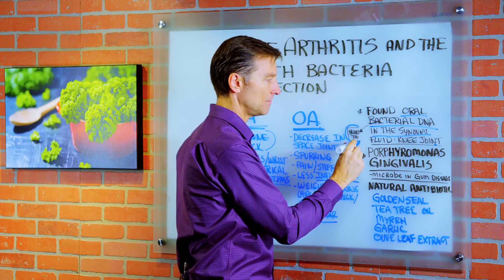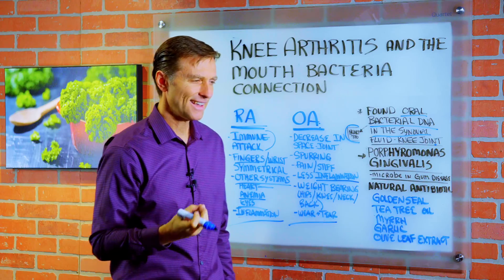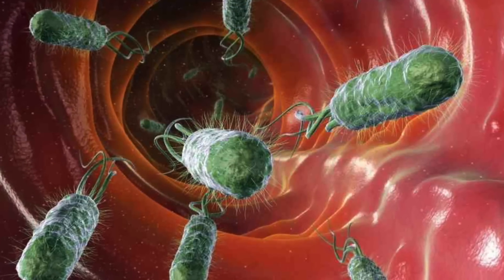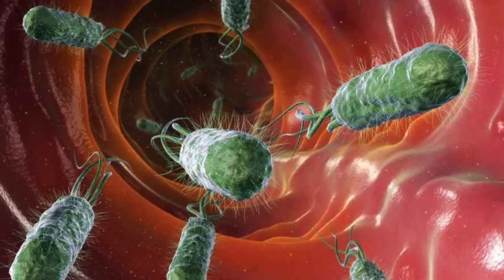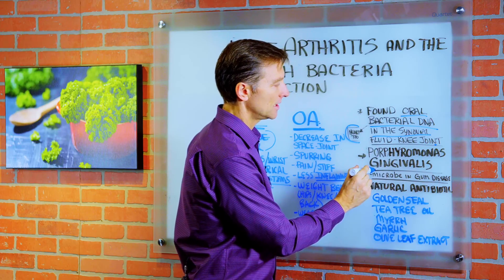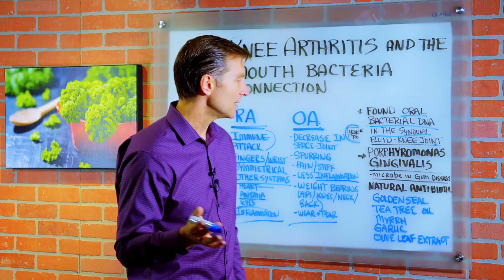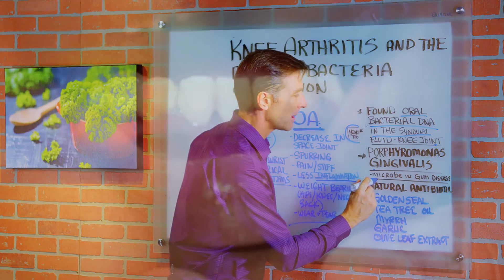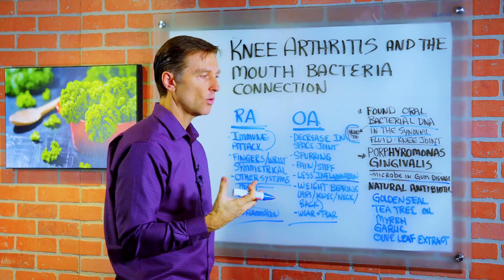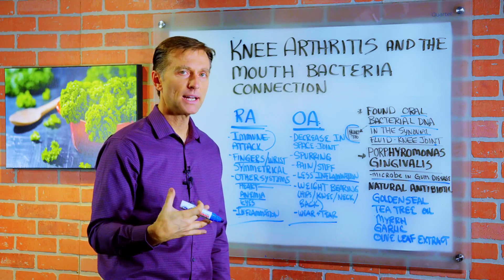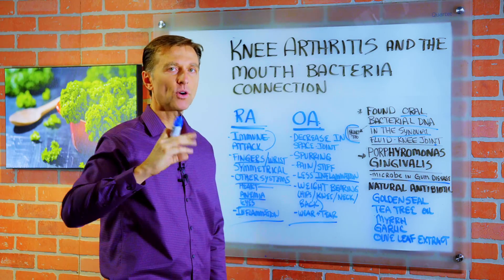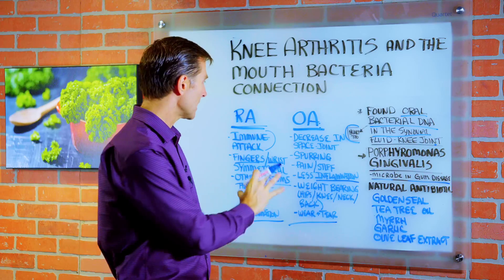It was also found in the heart as well. So the question is: what the heck is this bacteria that's supposed to be in the mouth doing in your joints, in the knees, and why is it in the heart? The name of that bacteria is Porphyromonas gingivalis — not that you really wanted to know that, but that's the name. It's also the microbe involved in gum disease. This made a lot of sense to me, because now it gives a reason for your body to attack the joint — it's not attacking itself, it's attacking a microbe within the joint. That makes way more sense.